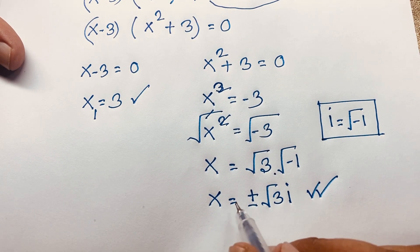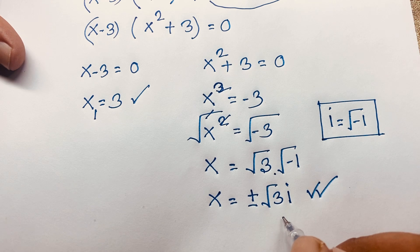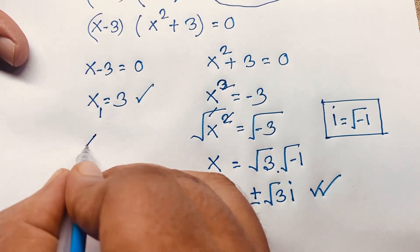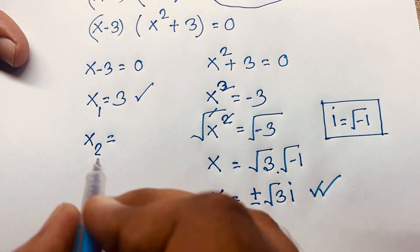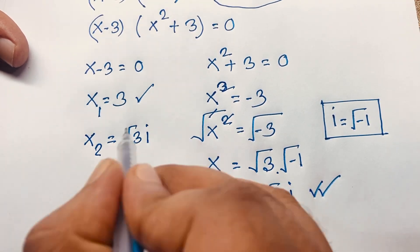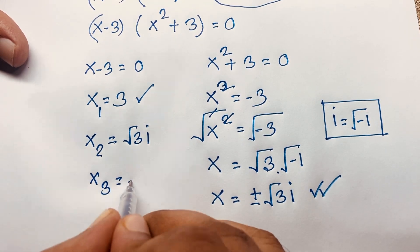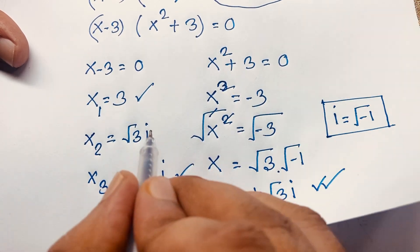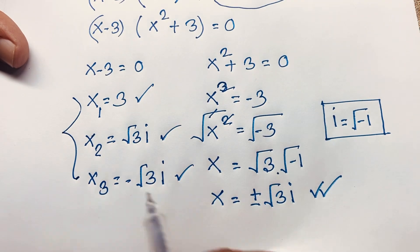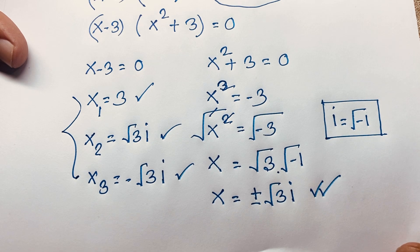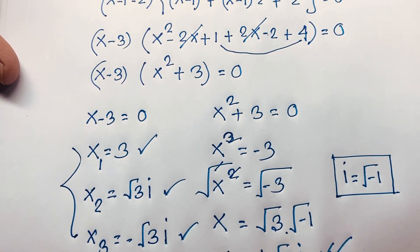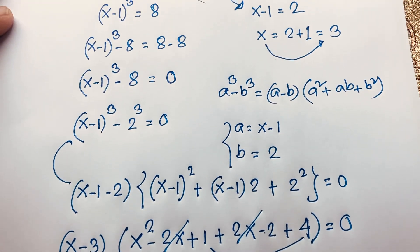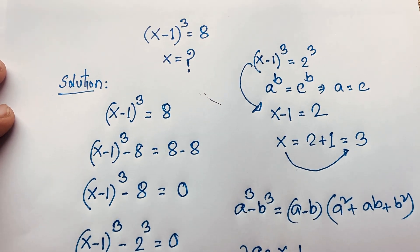So x equals plus or minus √3·i. These are our two complex solutions — not real solutions. Our final answers are: x₁ = 3, x₂ = √3·i, and x₃ = −√3·i. Thank you all! If you enjoyed this math problem, please subscribe to my channel for other interesting videos. Goodbye, take care!